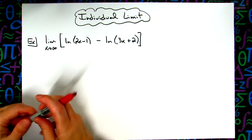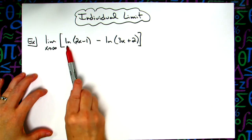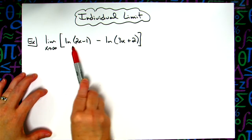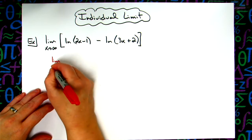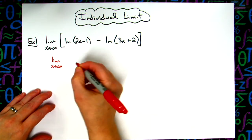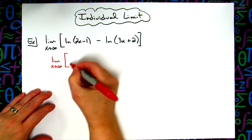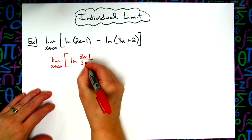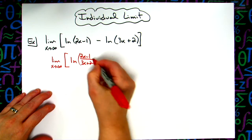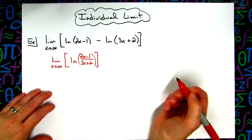Alright, so what I'm going to do here first is take a look at the inside part of this expression and apply my log rules. So then I'm going to have the limit as x approaches infinity. I'm going to rewrite this as the natural log of 2x minus 1 over 3x plus 2. Okay, that's your laws of logarithms.